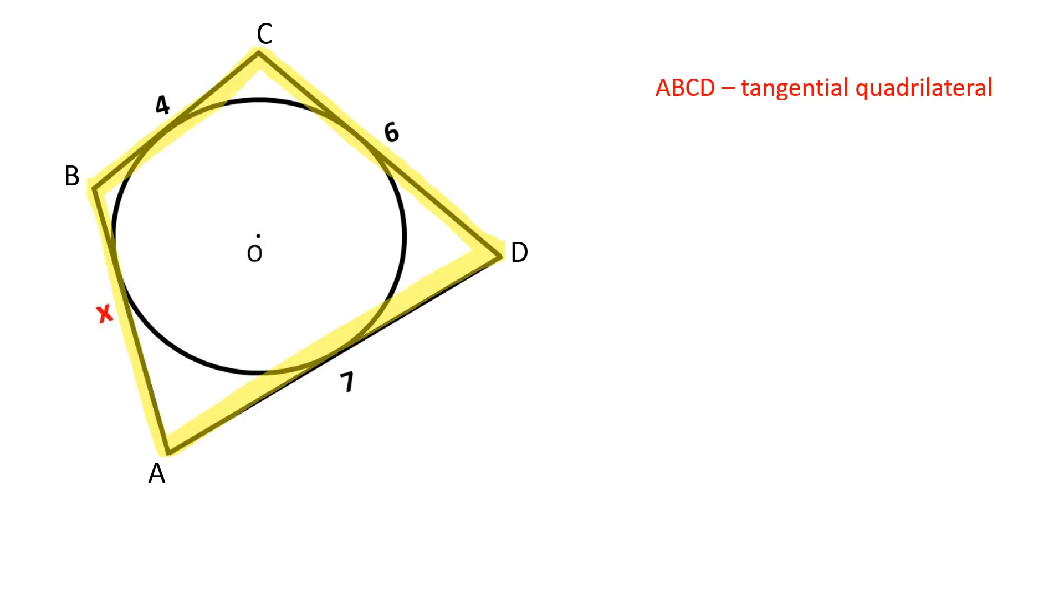A, B, C, D is a tangential quadrilateral, a quadrilateral whose sides are all tangent to a circle inscribed within it.